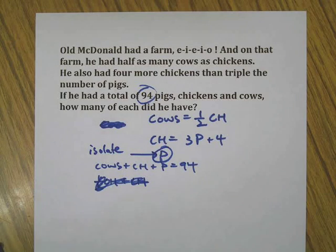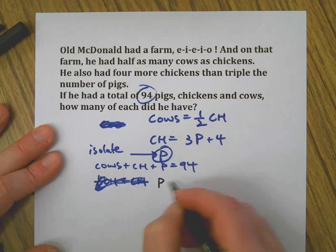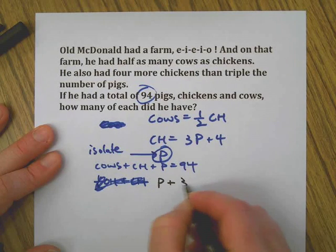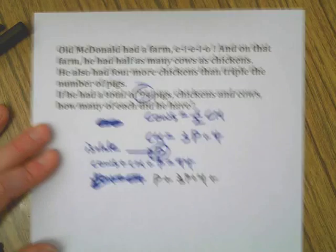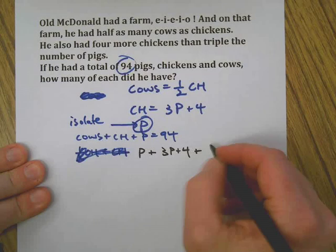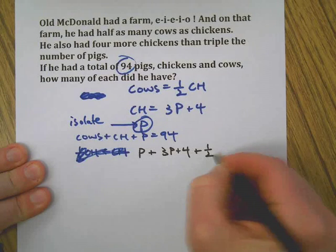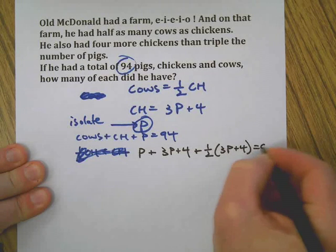I apologize for getting this off to a bad start. So we have pigs, we have chickens, and now we need cows. One-half of (3P + 4) equals—wait, that whole thing is 94. All right, so that's pigs, this is chickens.